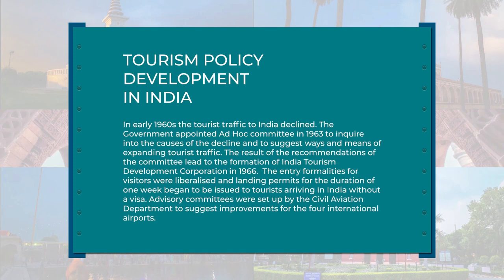In the early 1960s, tourist traffic to India declined. The government appointed an ad hoc committee in 1963 to inquire into the causes of the decline and to suggest ways and means of expanding tourist traffic. The recommendations of the committee led to the formation of India Tourism Development Corporation Limited in 1966. Entry formalities for visitors were liberalized, and landing permits for the duration of one week began to be issued to tourists arriving in India without a visa. Advisory committees were set up by the Civil Aviation Department to suggest improvements for the four international airports.